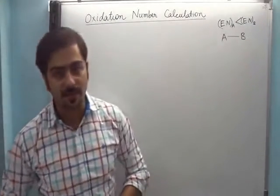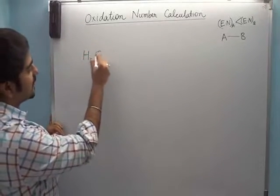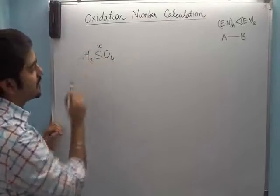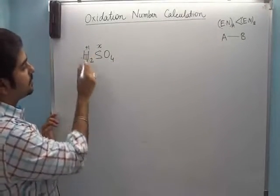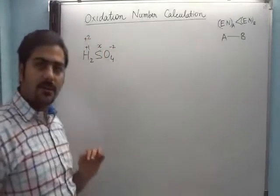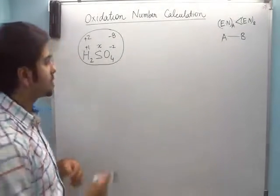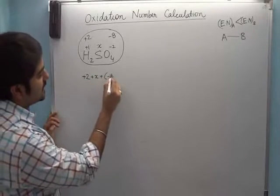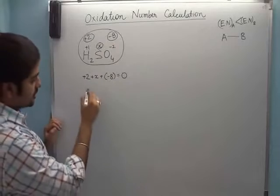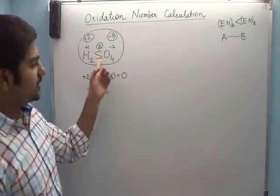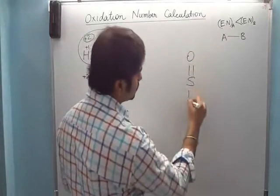There are two methods to calculate oxidation number: number one is through formula, and number two is through structure. Let's apply both methods using sulphuric acid (H₂SO₄). Using the formula method: hydrogen is generally plus one, so plus two for two hydrogens; oxygen is generally minus two, so minus eight for four oxygens. The molecule is neutral, so plus two plus x plus minus eight equals zero, which gives x equals plus six. So by formula, sulfur's oxidation number is plus six.